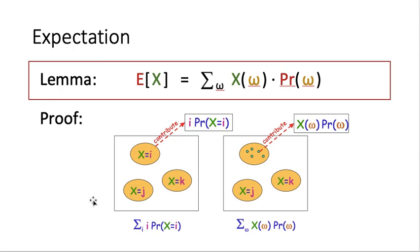We use a picture proof to help us understand why. On the left-hand side is the original definition of expected value of x. Here we consider the sample space and group the outcomes so that outcomes are grouped by the value of x. All the outcomes in one group have x value equal to i, all outcomes in another group have x value equal to j, and all outcomes in another group have x value equal to k.